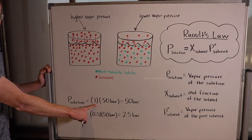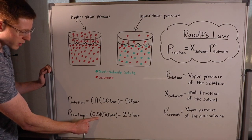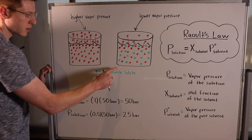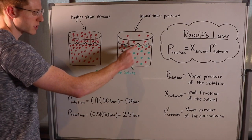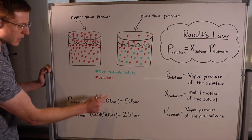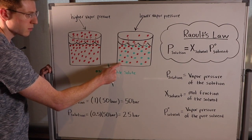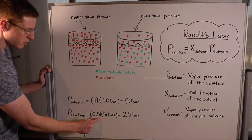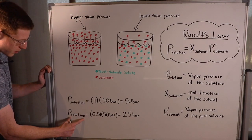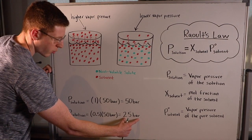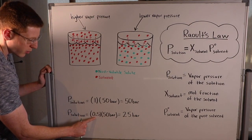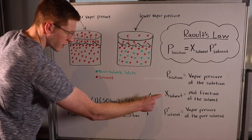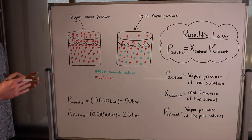But what if the mole fraction of the solvent is not 1? If we decrease it to 0.5, the red dots — the pure solvent — represent only half the molecules in solution, and the non-volatile green solute makes up the other 0.5 of the mole fraction. When we decrease the mole fraction by half, the vapor pressure decreases proportionally by one half: 0.5 times 50 bar equals 25 bar. So when the mole fraction of the solvent decreases, the vapor pressure of the solution decreases proportionally.